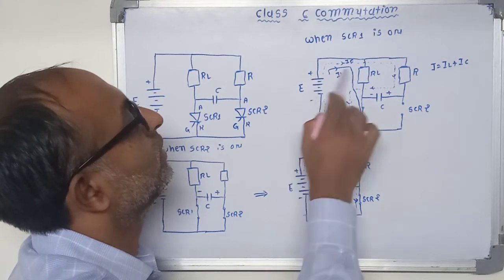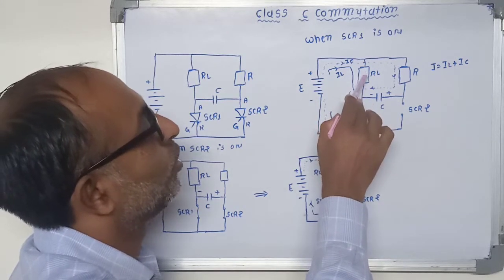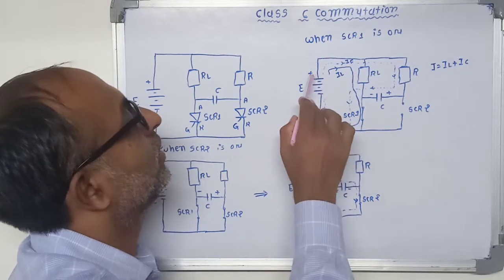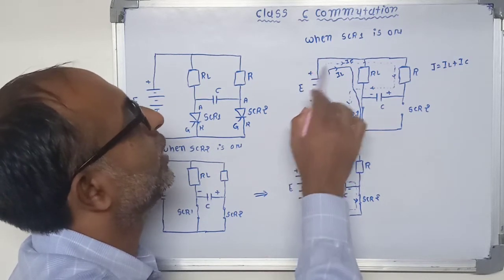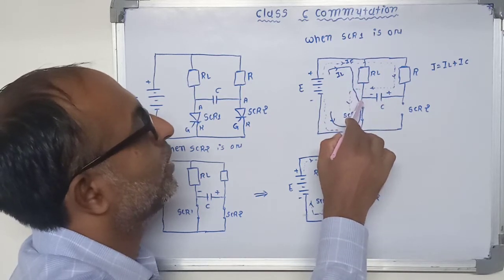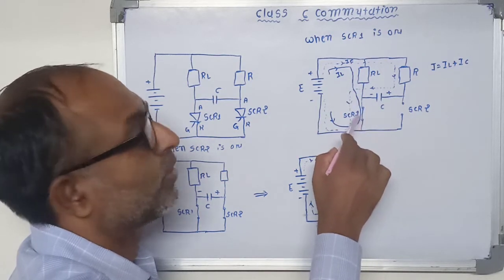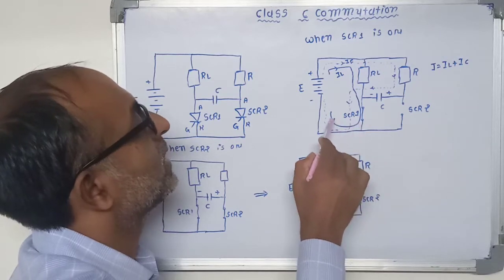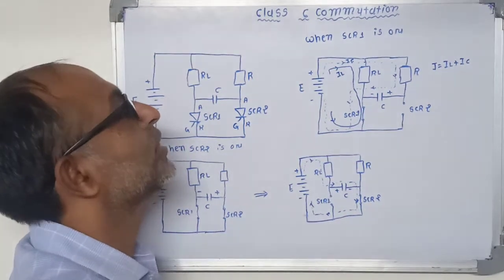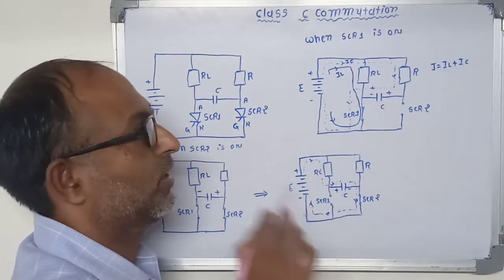So that means there are two loops available and two types of current are passing through this circuit. One current passing through this load resistance. Now the path of this current is from plus E to RL and it is passing through anode terminal, anode to cathode of SCR1 and then it is passing through minus E voltage. And this current is known as load current.